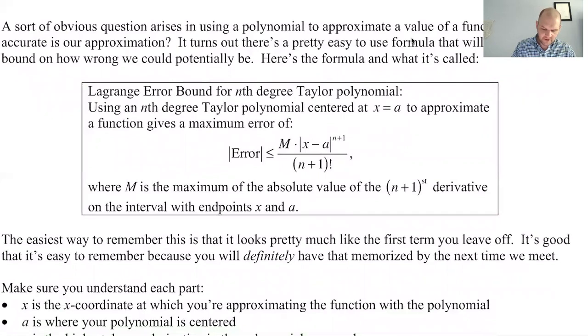It's called the Lagrange error bound. And you're going to hear it a lot. So it's the Lagrange error bound for nth degree Taylor polynomial. What's important is you need to know what n is, because n plays a role in the error bound. So the most you could possibly be wrong, maybe you're over, maybe you're under, we're going to put absolute values around it. The absolute value of the error, the most you could be wrong, is less than or equal to m times the absolute value of x minus a to the n plus 1, over n plus 1 factorial.